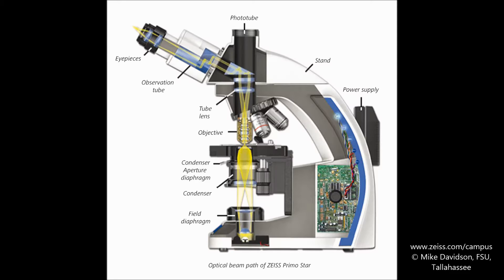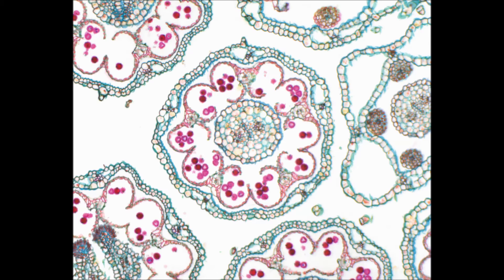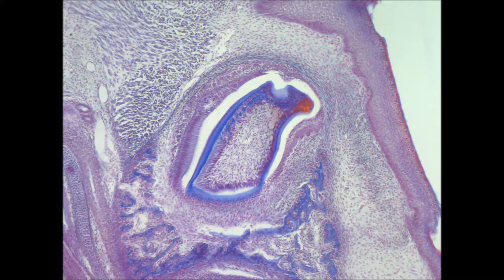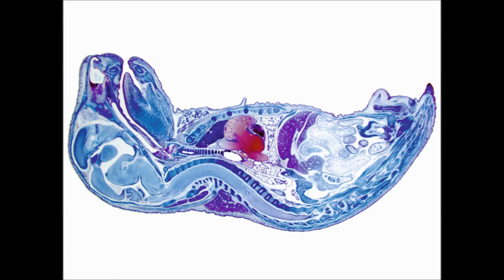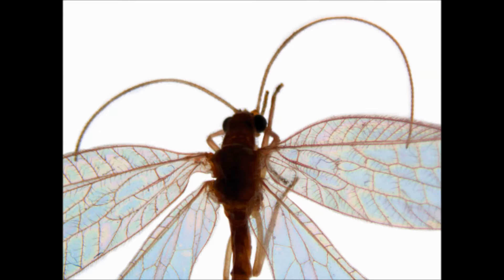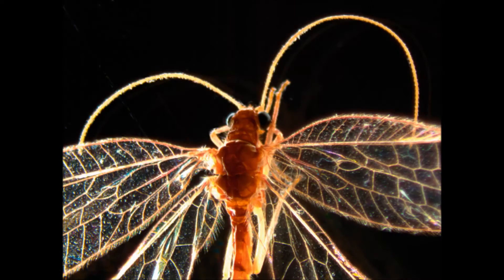It was August Kohler, an early member of the Carl Zeiss Corporation, who in 1893 developed the most important specimen lighting technique to date. Bearing his name, Kohler illumination is a method of optical alignment that helps the user produce an evenly illuminated visual field with good contrast and maximum sample detail.